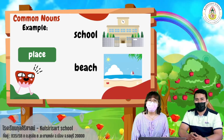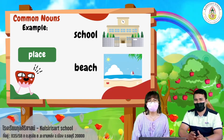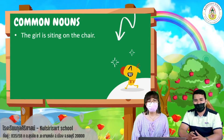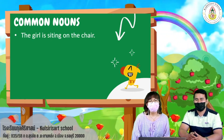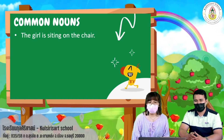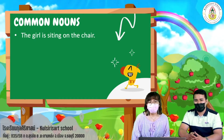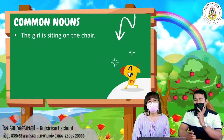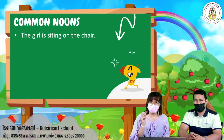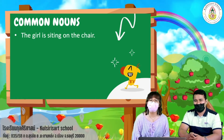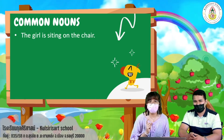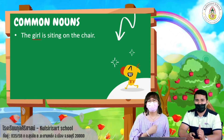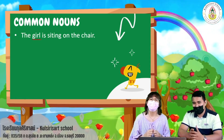Now let's identify some common nouns in a sentence. Let's start with the first sentence: 'The girl is sitting on the chair.' In this sentence, we have two common nouns. The first common noun is girl, and the next is chair.